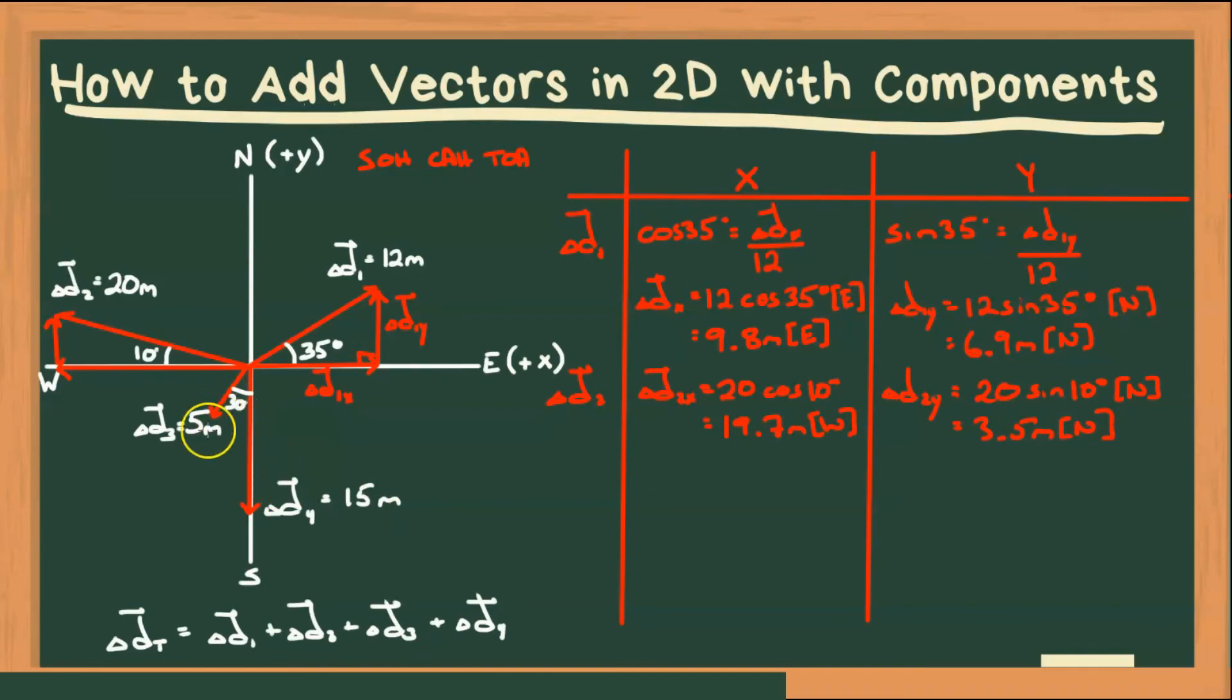Doing the same, for delta D3, we have a vertical component towards the south, and a horizontal component towards the west. Now notice this time that our vertical component is adjacent to the angle. If it's adjacent to the angle, we're going to be using cosine to solve for that vertical component. It's not always going to be cosine for our X direction. It all depends on where that angle is.